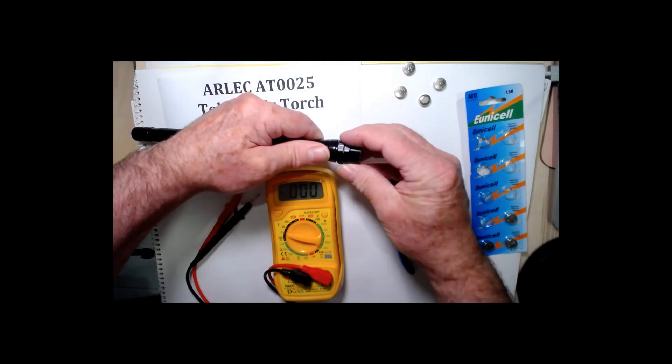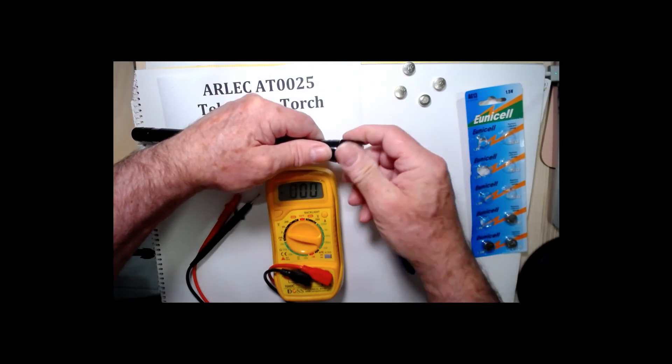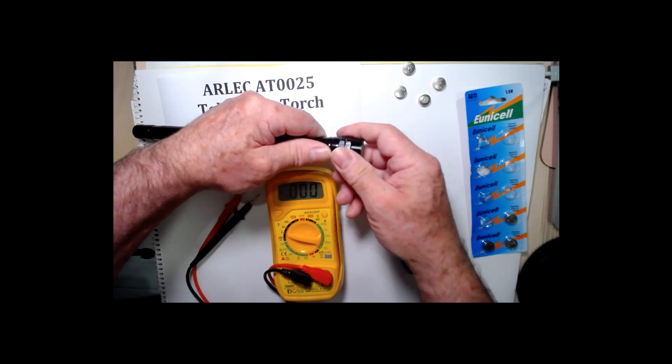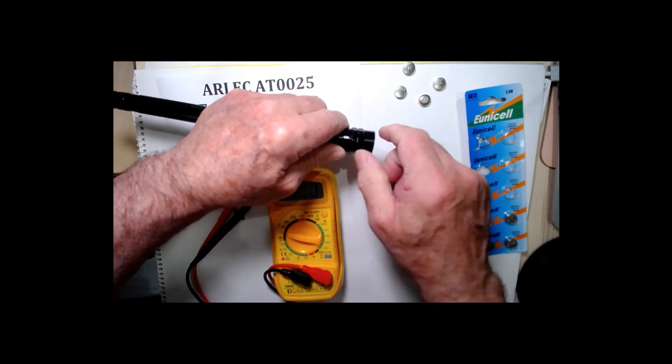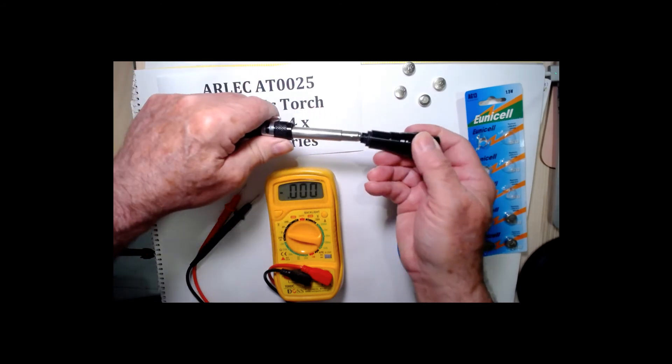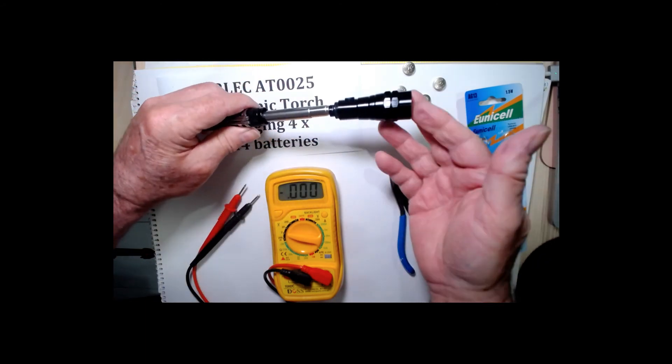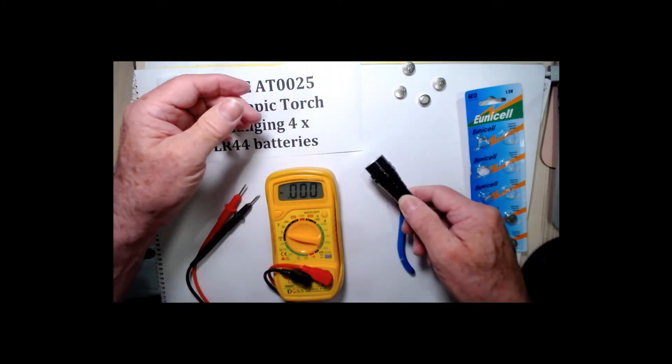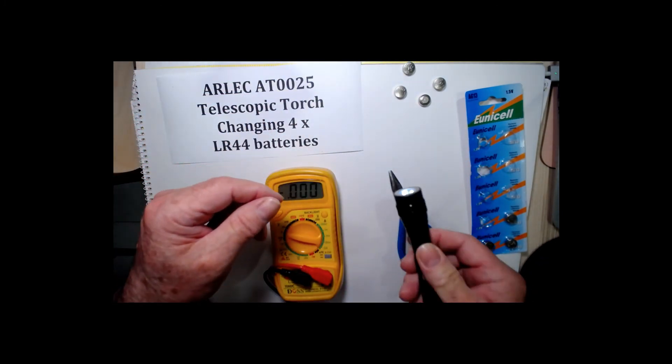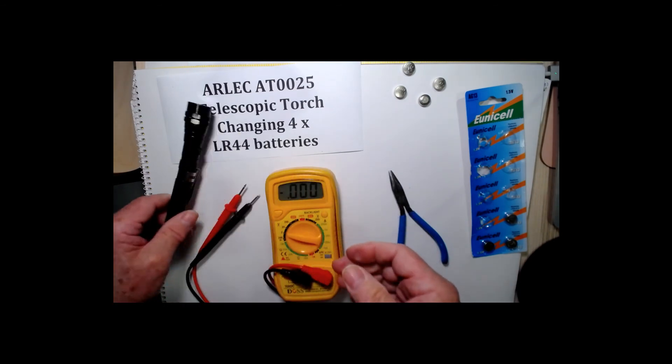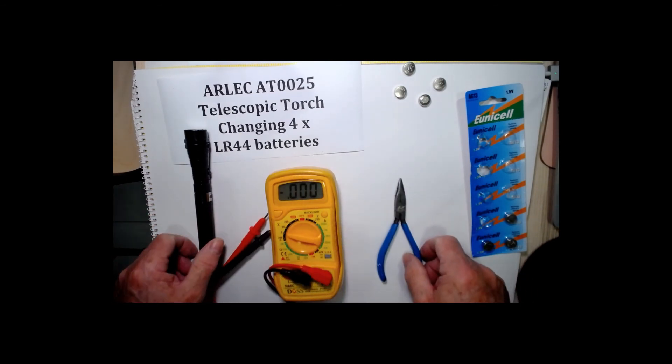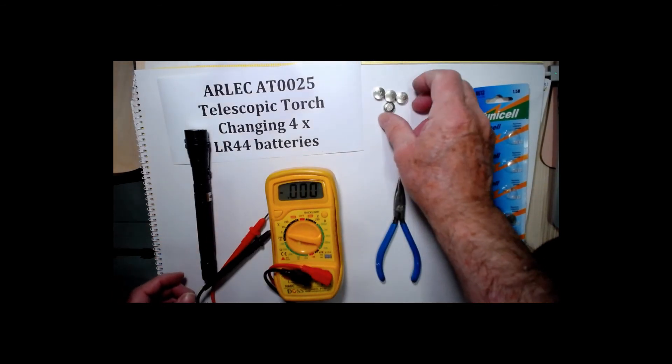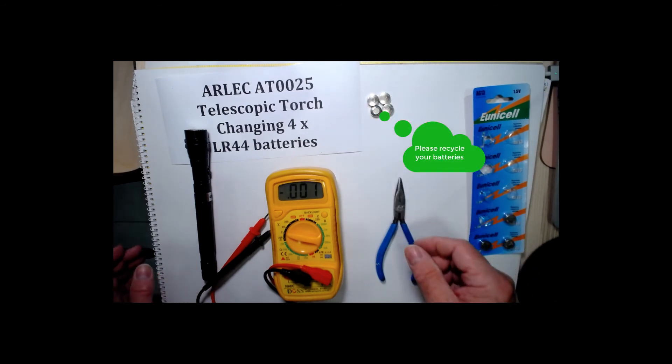Then put the top back on. Try not to cross thread it. You can tighten this up with a wrench but I don't know if it's really necessary unless you're throwing it about in a tool case. Perhaps it might be a good idea to do that. Let's see if it works. Yep, fine. Now that's that. Don't forget to recycle your batteries.